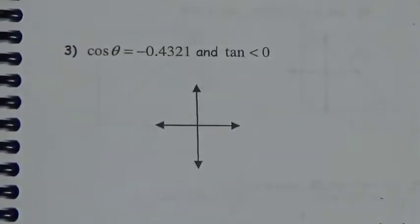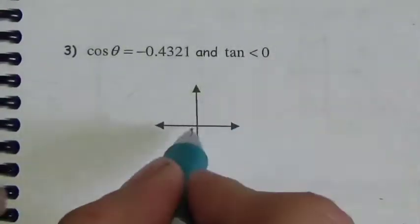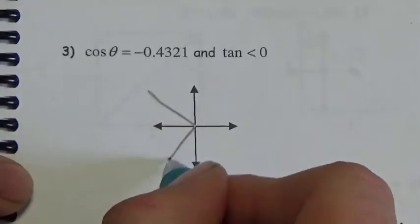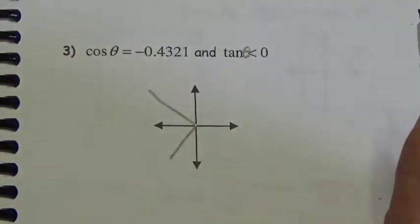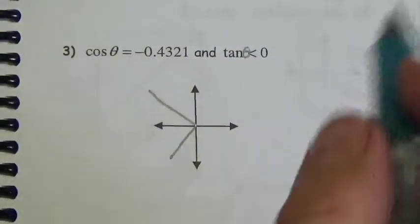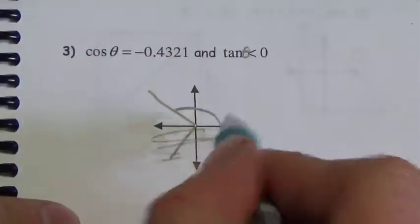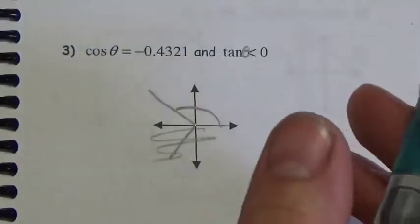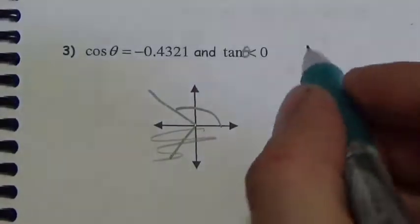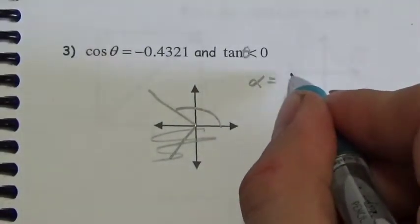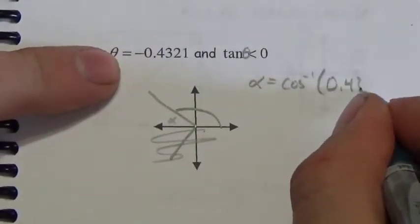This last one is similar to the first in this section. Cosine of theta is equal to negative 0.4321. Cosine is negative in quadrants 2 and 3. But we're also told that tangent of theta is negative, and tangent is negative in quadrants 2 and 4. The overlap means it must be a second quadrant angle we're looking for — just one specific answer, not two.